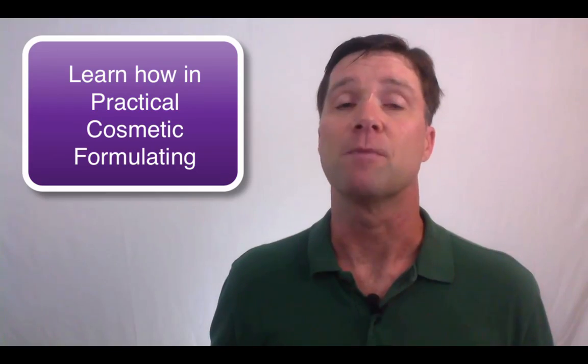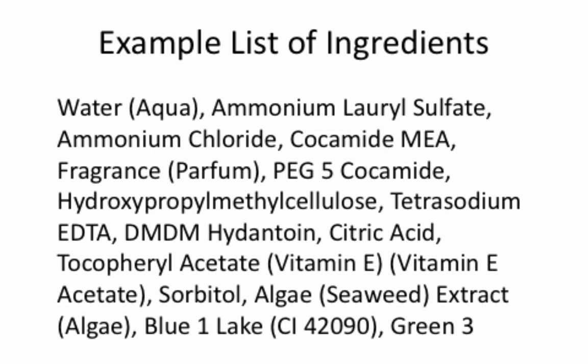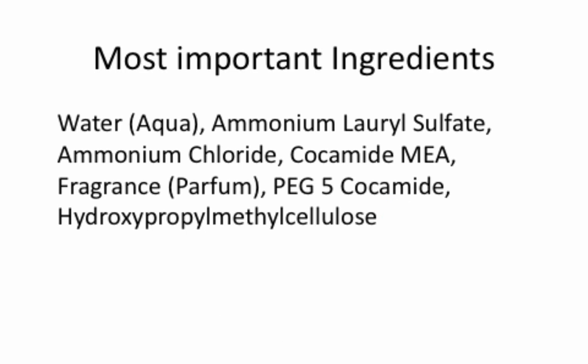We go through this in a lot of detail in our Practical Cosmetic Formulating course. For the listing in our example, we need to find the 1% line. Since I know that shampoos are mostly water — say 85 to 90% — it's not surprising that water is the first ingredient. I also know that ammonium lauryl sulfate is the primary detergent, so it is certainly in the formula above 1%. Scanning through the list, I see tetrasodium EDTA, which is a chelating agent used in formulas, and I know it's never used at 1%, so the 1% line must be prior to the tetrasodium EDTA. This means we can pretty much ignore everything from EDTA onward, which gives us the most important ingredients: water, ammonium lauryl sulfate, ammonium chloride, kokamide MEA, fragrance, PEG-5 kokamide, and hydroxypropylmethylcellulose.